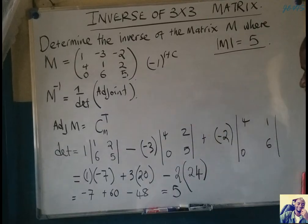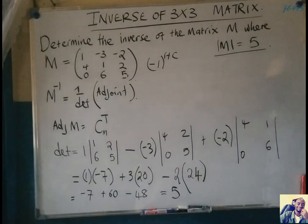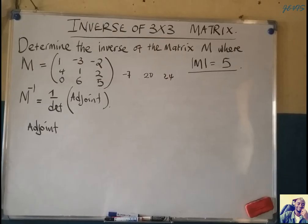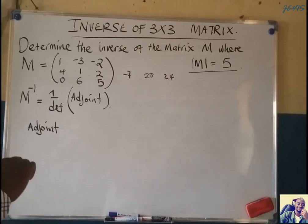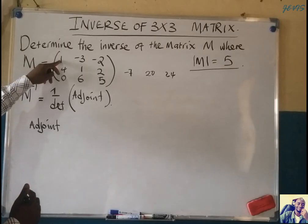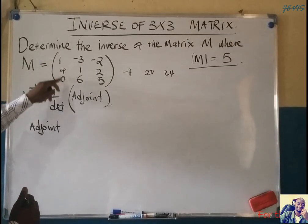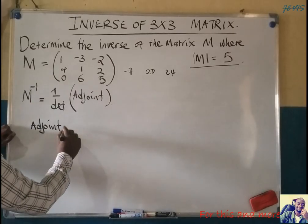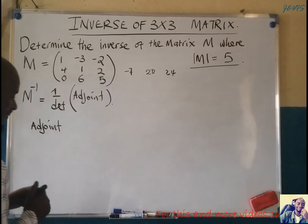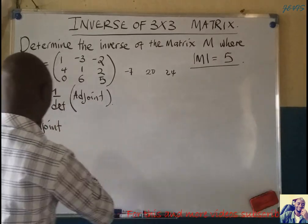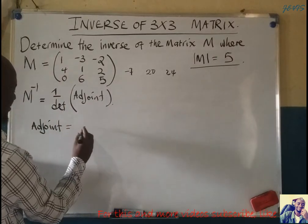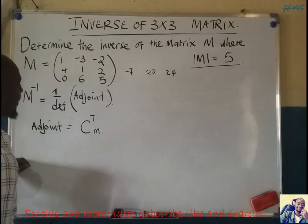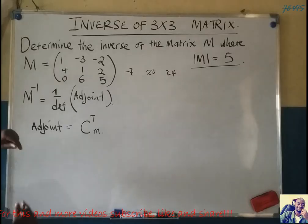Now the next thing is to find the adjoint matrix. We go first to the matrix of cofactors, because we know that the adjoint is equal to the transpose of the matrix of cofactors of M. So first we have to find the matrix of cofactors.